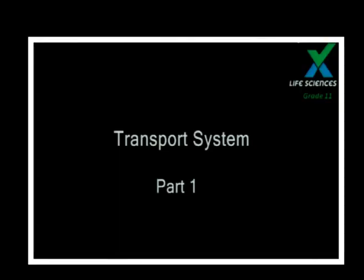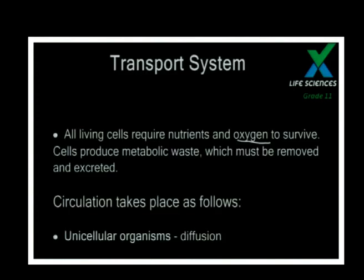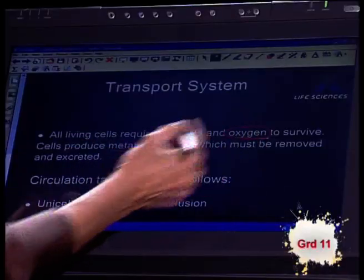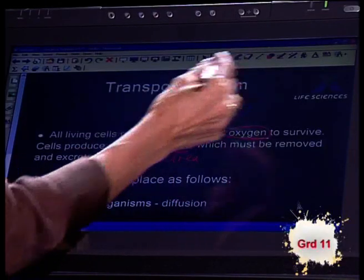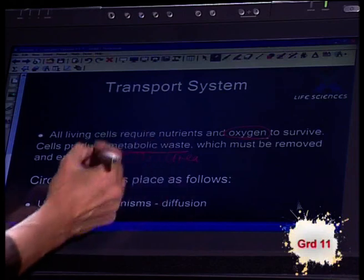This is transport system part one, because there are two parts. All living cells require nutrients and oxygen to survive. Cells also produce metabolic waste - we're looking at carbon dioxide, urea, creatinine, and others we'll cover when we get to the kidney and excretion. For now, just oxygen into the cells and carbon dioxide must be moved away.